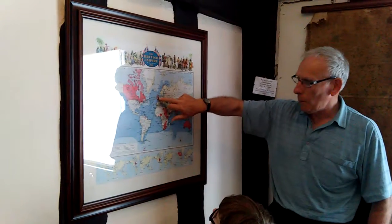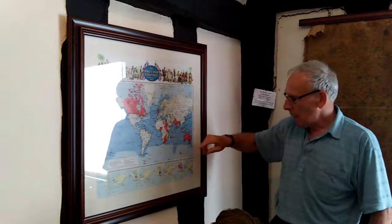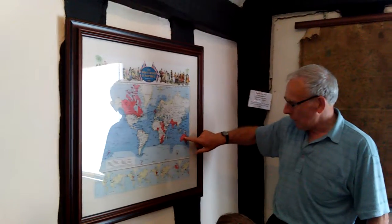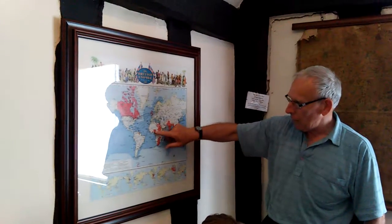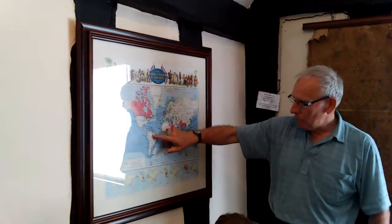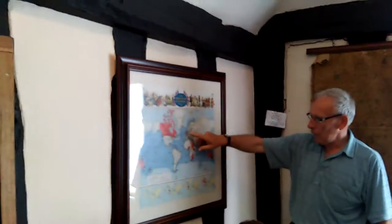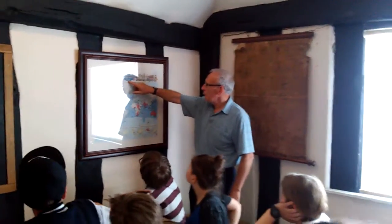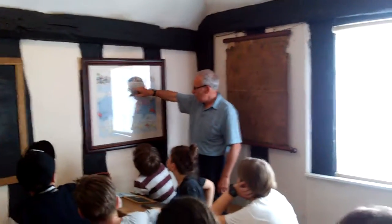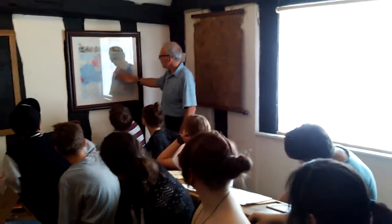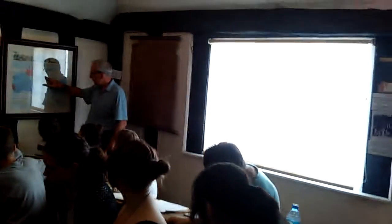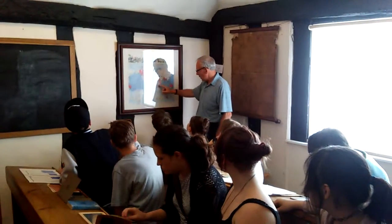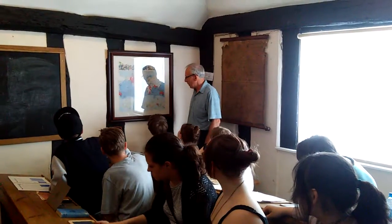All the places shown in red were part of the British Empire, ruled by Britain. Queen Victoria was eventually titled Empress of India. The Empire included Australia, India, much of Africa, Canada, and a little bit of South America. What an amazing thing that a small country like Britain was ruling over these vast areas of the world.